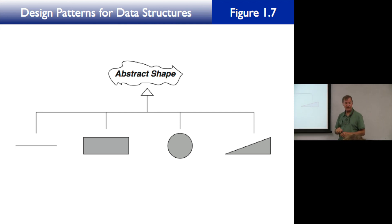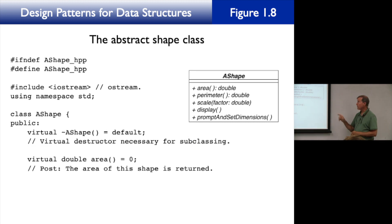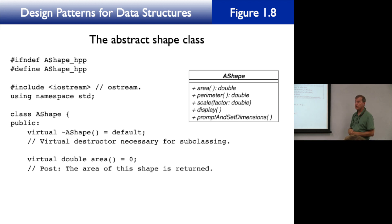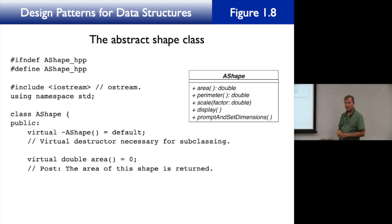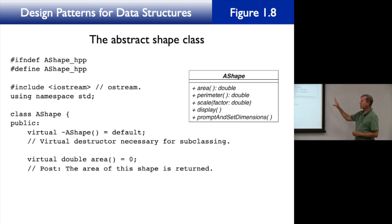The white triangle symbol in figure 1.7 represents inheritance. An abstract shape has a line, rectangle, circle, and right triangle each inheriting from it. In figure 1.8 we have a UML class diagram. The first compartment contains the name, the second contains the attributes, and the third contains the operations or methods.